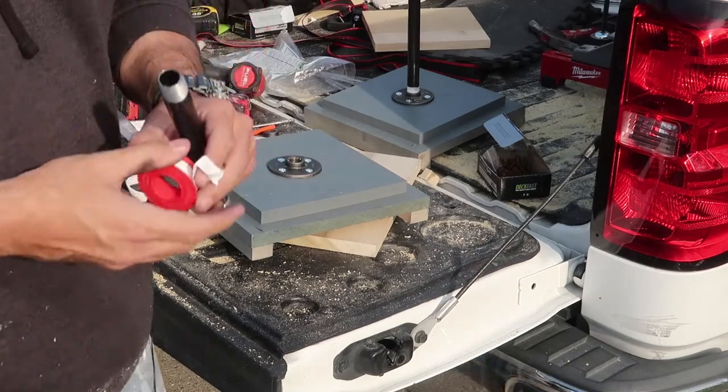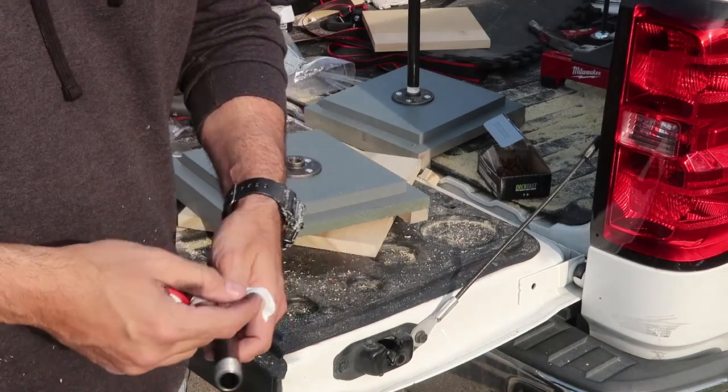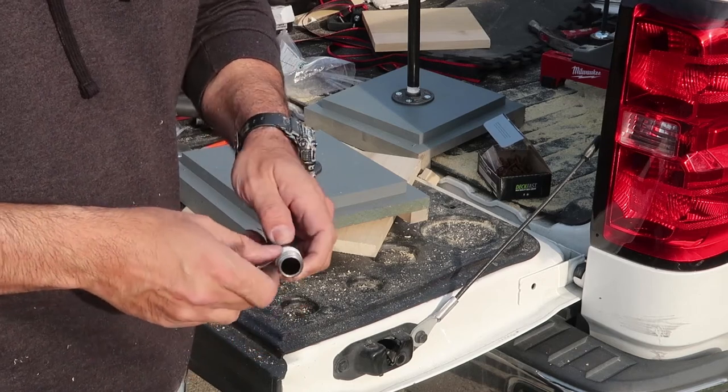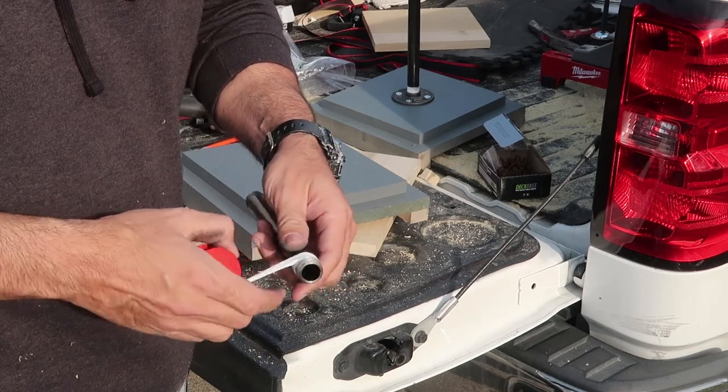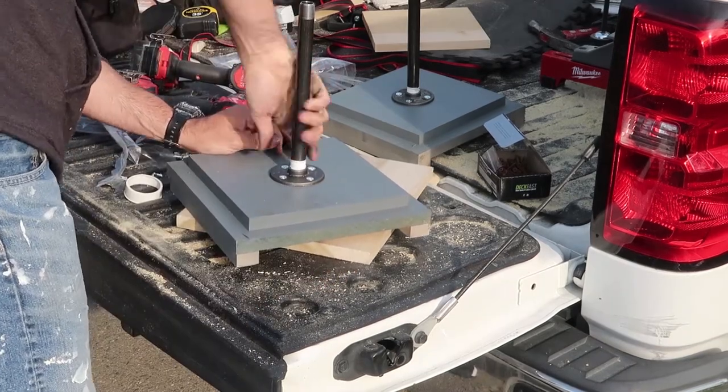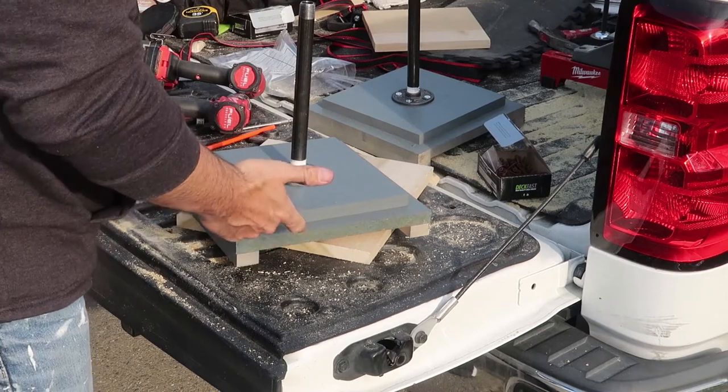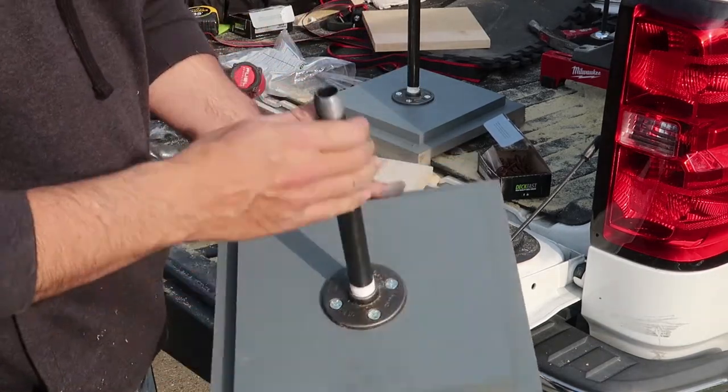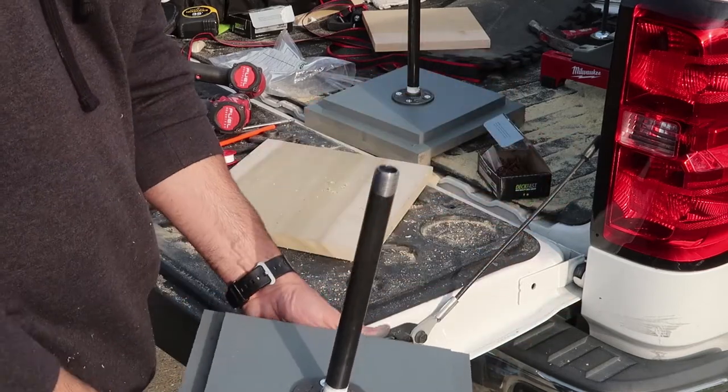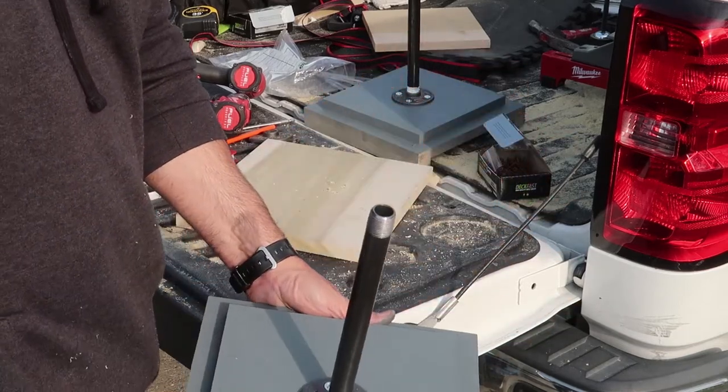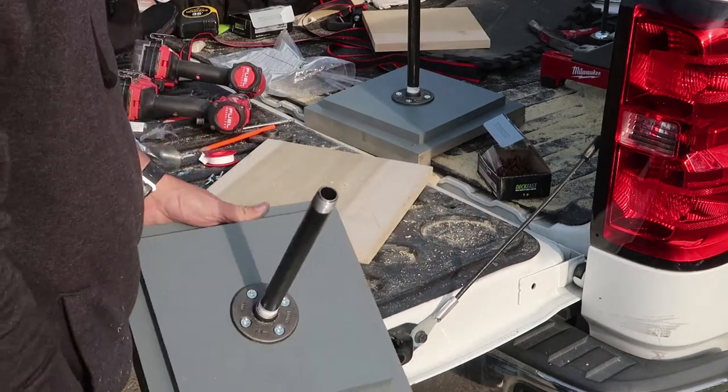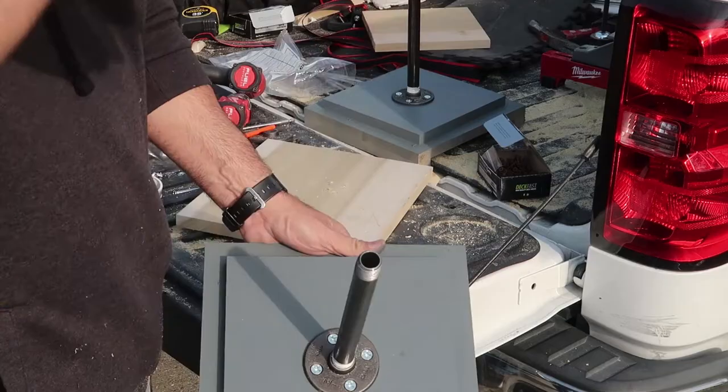So we're good. Put some plumber's tape on it because again there's no need for it, I'm just being dumb. Or having fun I should say, having fun, making it look neat. Two bases and now we're going to go upstairs and I'm going to make the head part of this armature. I'm going to clean up all this mess and wrap it up.